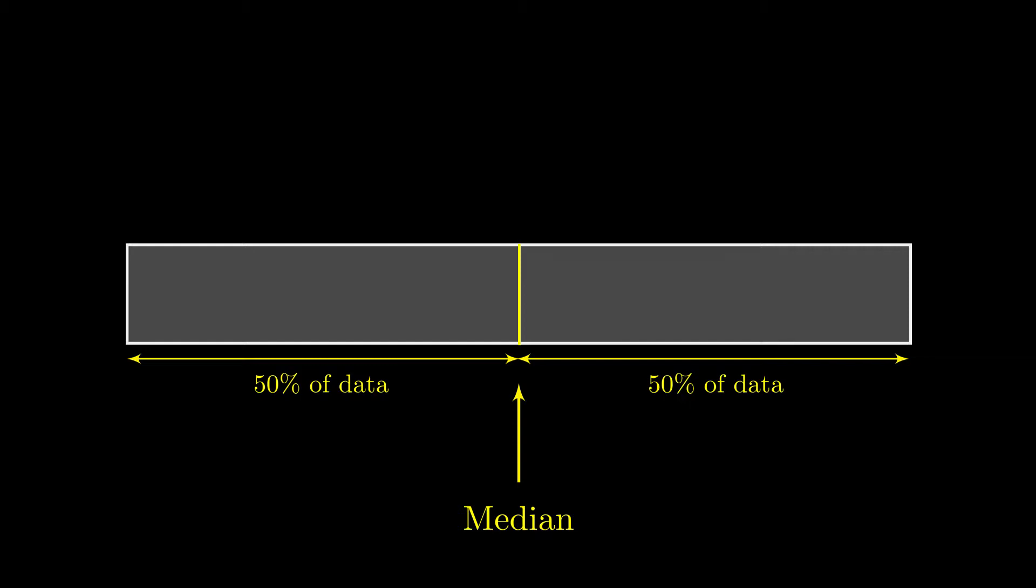Now what quartiles are is if we do this again to each of those halves, so we split them each in half again, the lower quartile would be here and the upper quartile would be here. Now we call the lower quartile Q1 and the upper quartile Q3. Q2 is missing because that's just the median, because two quarters is a half.